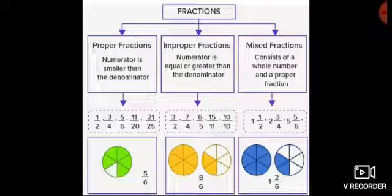Next is mixed fraction. It consists of a whole number and a proper fraction. Look at these examples: whole number 1 and 1 upon 2; whole number 2 and 3 upon 4; whole number 5 and 5 upon 6.